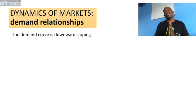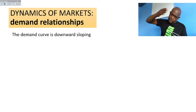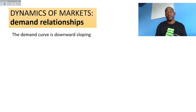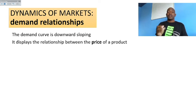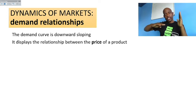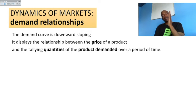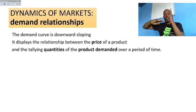You need to understand that a demand curve is downward sloping. The demand curve also displays the relationship between the price of the product and the quantity demanded. The price is recorded on the vertical axis and the quantity demanded is recorded on the horizontal axis.